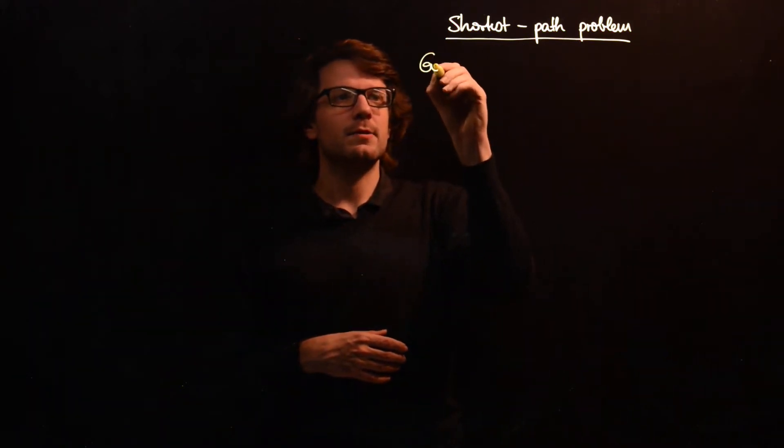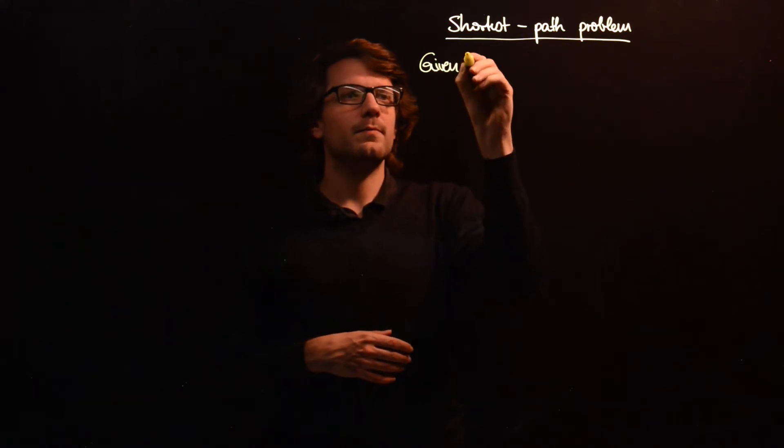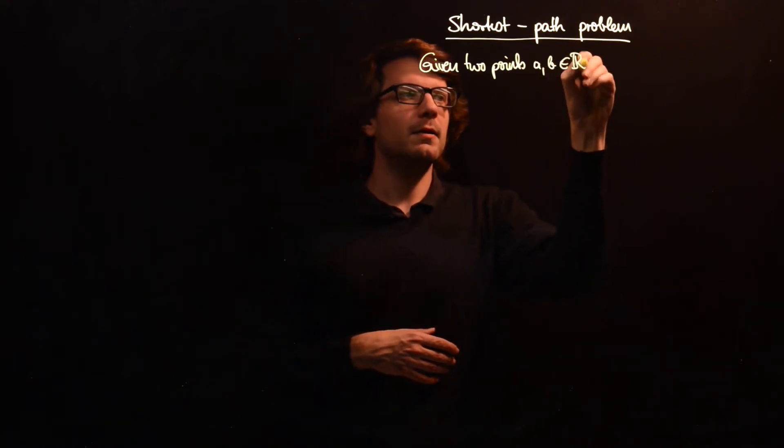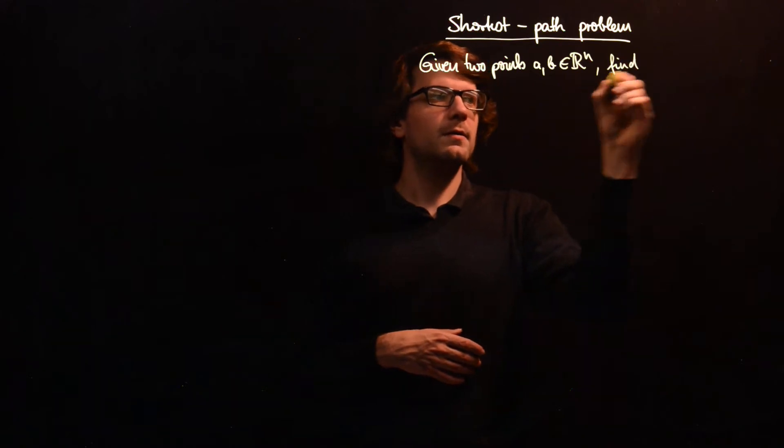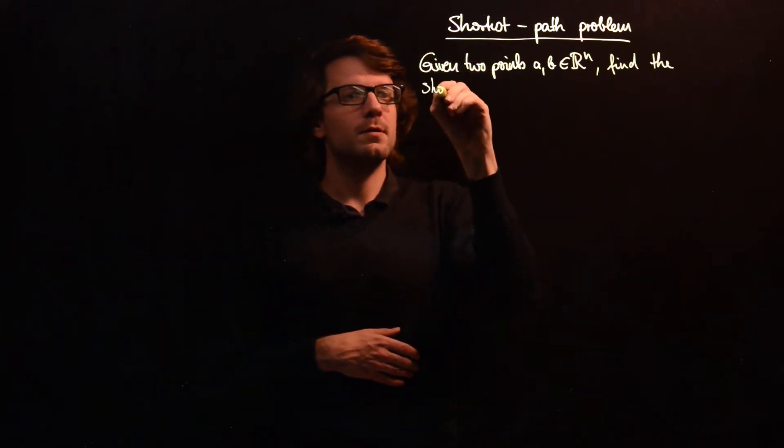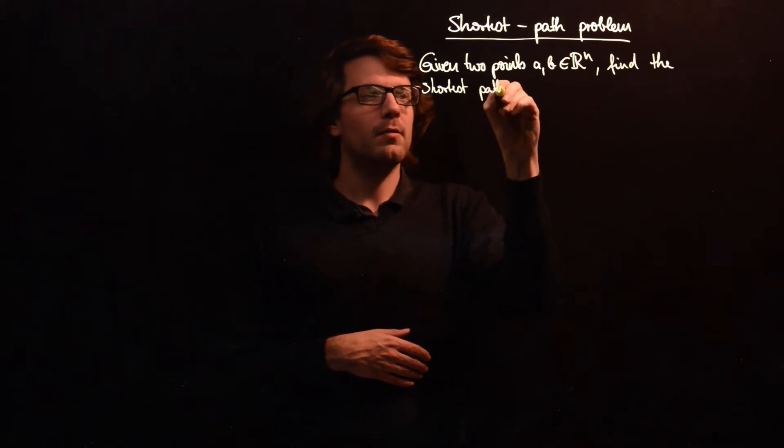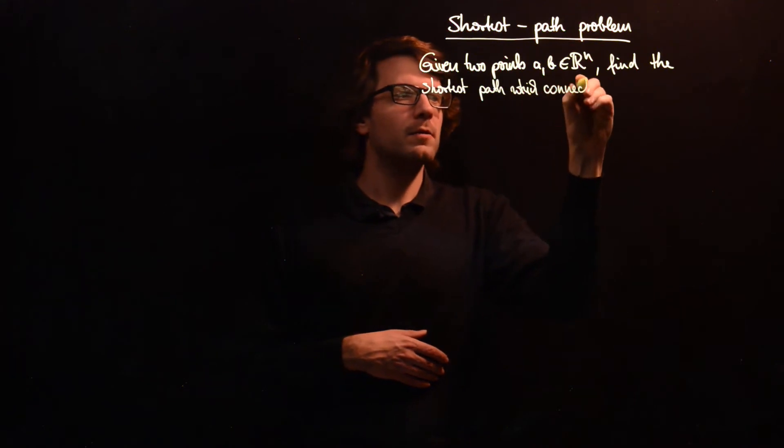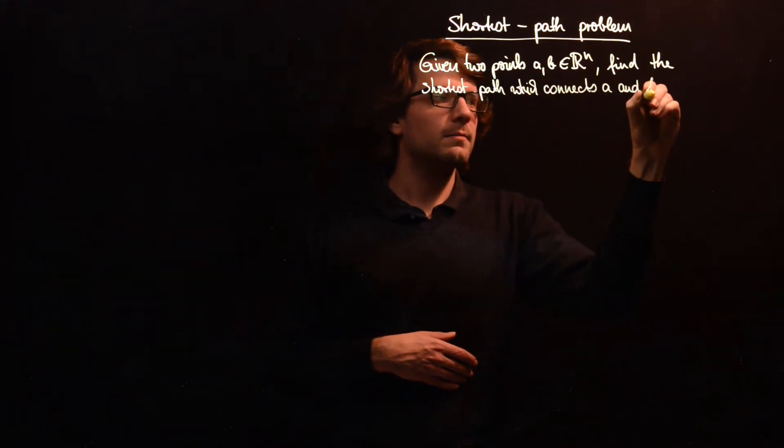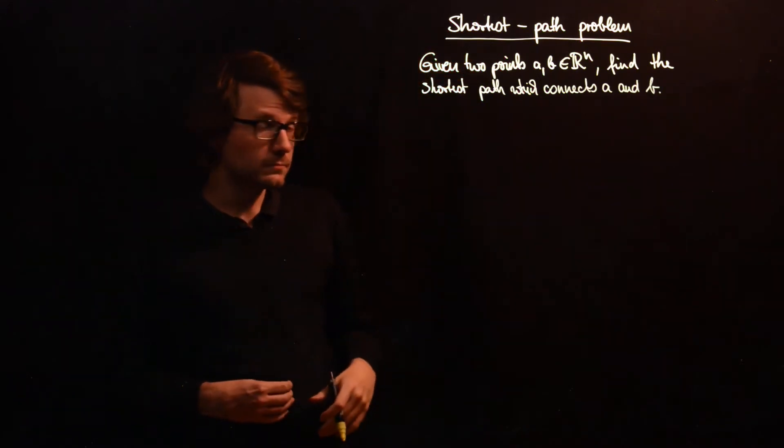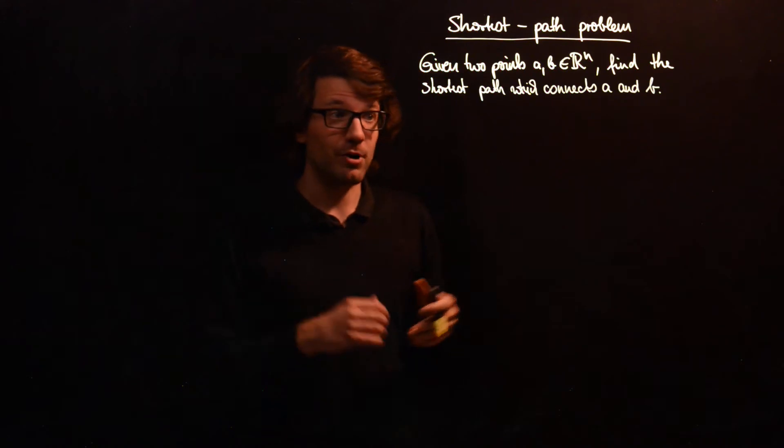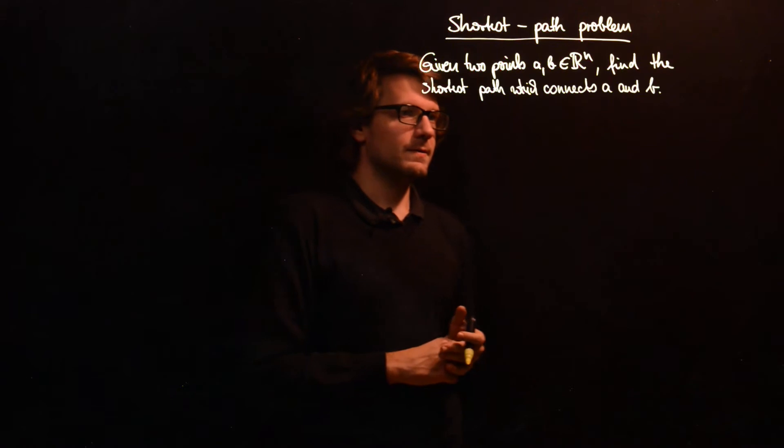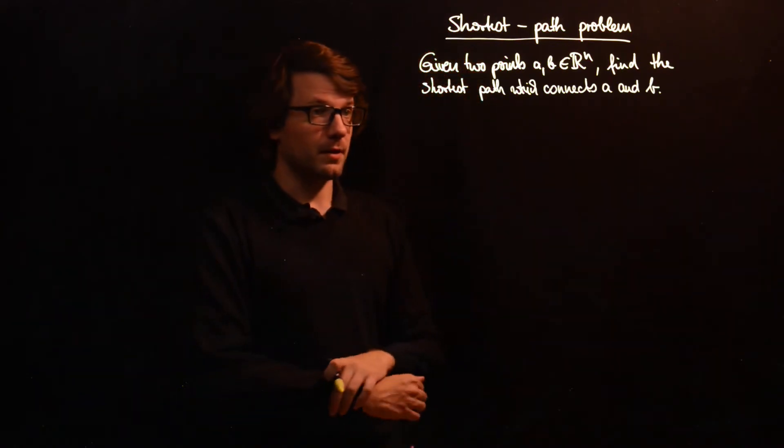So it is written as follows: given two points A and B in R^n, find the shortest path which connects A and B. So obviously you all know that the shortest path is the straight line, but we still want to formulate this in terms of an optimization problem, just for illustration.